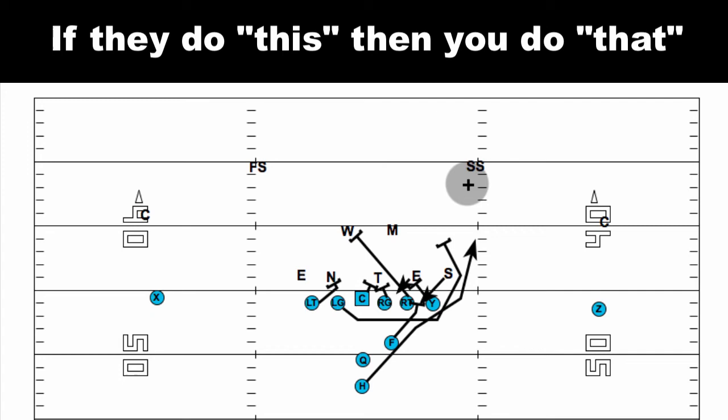So you can see the if-then: if they do this, then what do you do? You can have it built into the very play, or you can see what they're adjusting to and run a different play. It's much harder in my opinion to call a play that won't work against a certain kind of defense. Always find a way that if there's a look that doesn't work, you can automatically adjust the blocking scheme so that it does — or at the very least, you don't get the play blown up. Our ISO play is a good example of that.